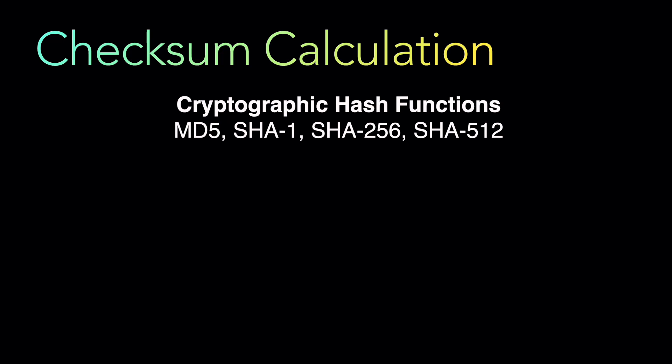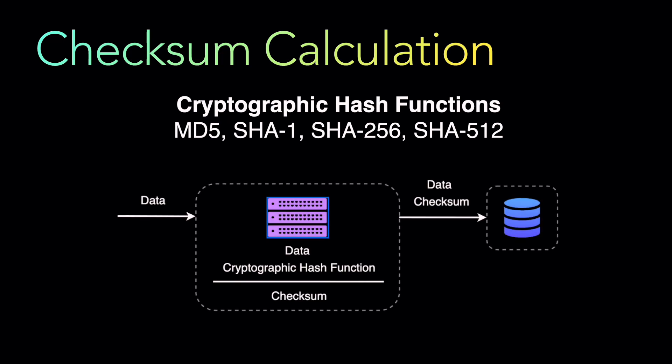How does the service operate? When data comes in, the service applies the cryptographic hash function to build the checksum on the fly, then writes both the data and the checksum to the database. On a read, it recalculates the checksum and checks whether it matches what was stored in the database. If there is a difference, it means there is a problem — the data got corrupted — and that is where you decide to maintain data integrity.